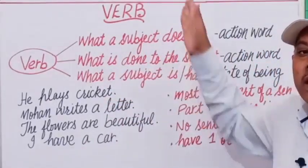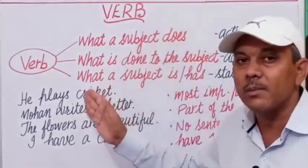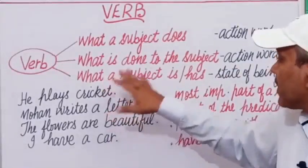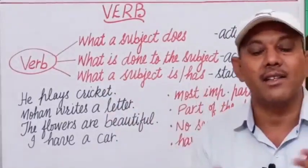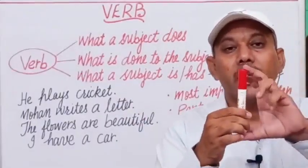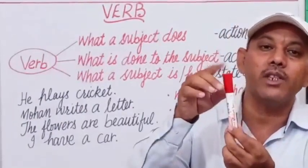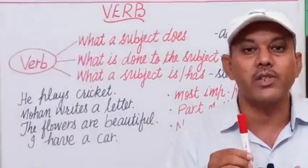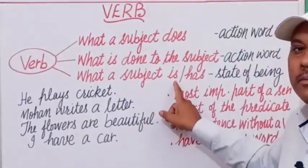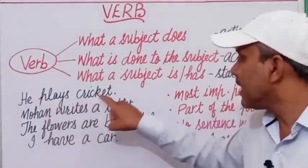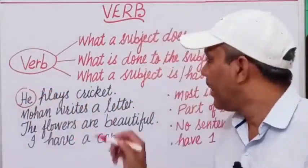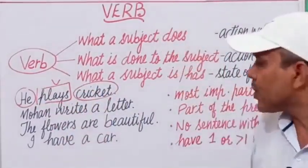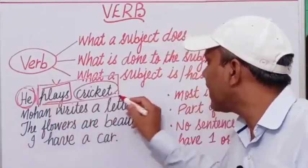What is done to the subject — when an action is done to the subject, the action word is found in its passive form, but it is still an action word. Thirdly, what a subject is and what a subject has. For example, 'This is a pen' — the word 'is' tells us about the state of being. 'I have a pen' — if a word tells us about possession or state of being, it is also a verb. For example: 'He plays cricket' — here 'he' is the subject, 'cricket' is the object, and 'plays' is the verb, which is part of the predicate.